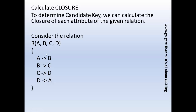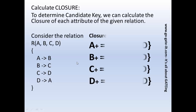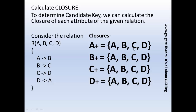We need to calculate the closure of attribute A, denoted A+. We check whether A derives all attributes of the given relation. A derives B, so the closure contains A and B. Now from B, B derives C, so we add C. From C, C derives D, so we add D. Therefore A+ gives A, B, C, and D — A derives all attributes.